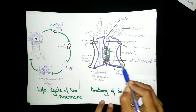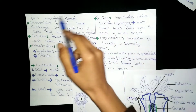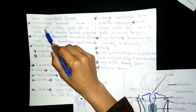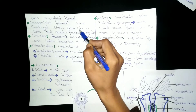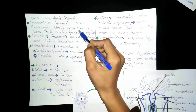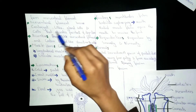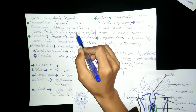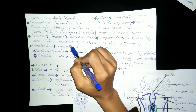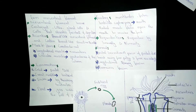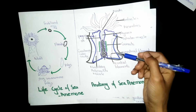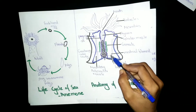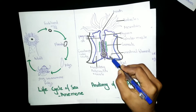The mesentrial filaments contain nematocysts (stinging cells), cilia whose function is water regulation, gland cells whose function is to secrete digestive enzymes, and cells that absorb food. So the mesentrial filaments are involved in digestion and absorption.